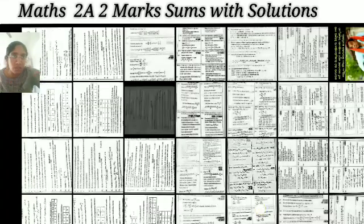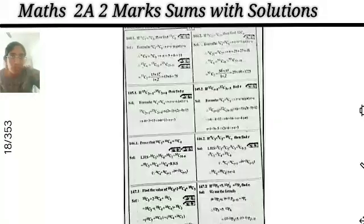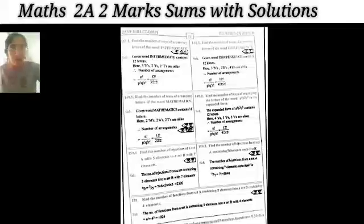Through the identity: 10C3 + 10C4 = 11C4. Also: 9C3 + 9C5 = 10Cr — find the value of r. Next: find the value of 10C5 + 2×10C4 + 10C3.